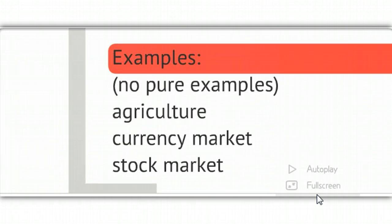Some examples, and again, there's no real pure examples. Agriculture is a good example, but as far as the many sellers, many farms have consolidated into large corporate farms. There aren't as many sellers as there used to be. So it's not a pure example, but agriculture is a good example.